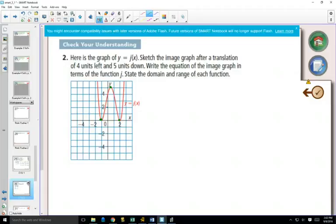So if I would do that: 1, 2, 3, 4, 1, 2, 3, 4, 5. One point would be there, another point would be there, and this point would be there.